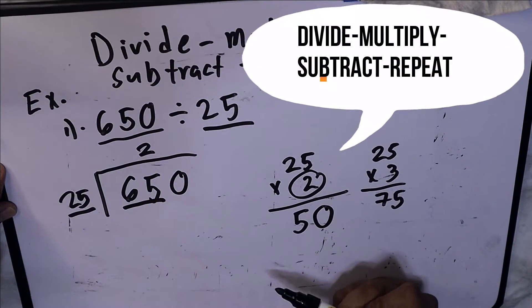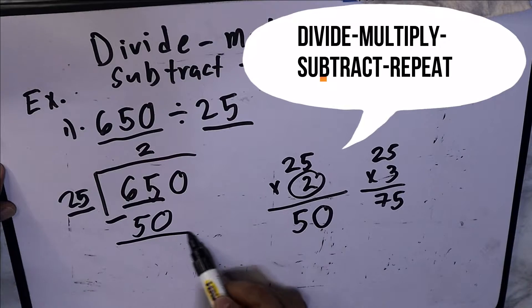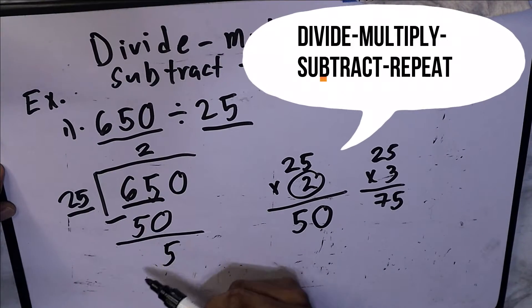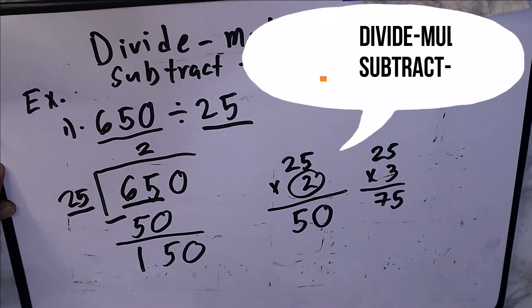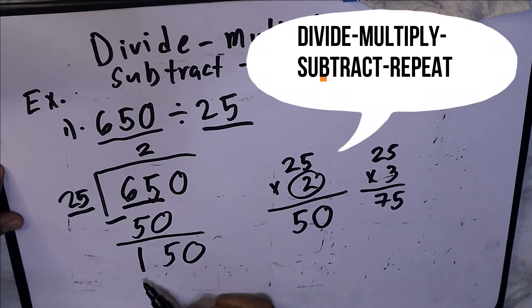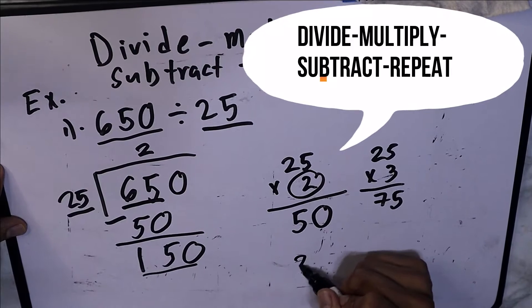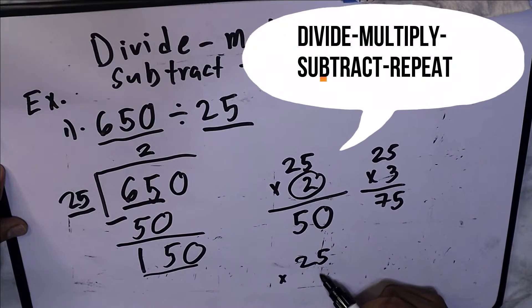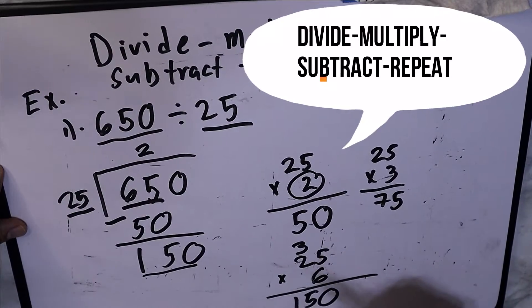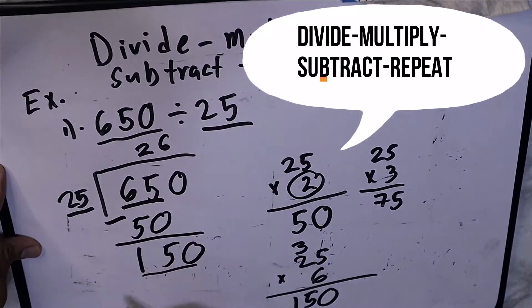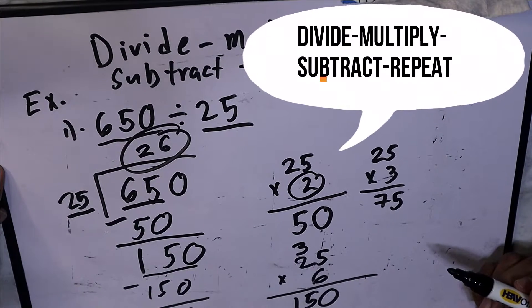2 times 25 is 50. That's our second process. Now the third process is subtract: 5 minus 0 is 5, 5 minus 0 is 5, and 6 minus 5 is 1. Then let's bring down 0. How many 25 are there in 150? The answer is 6. Then 6 times 25 is 150, and our final answer is 26. That's for our example number 1.